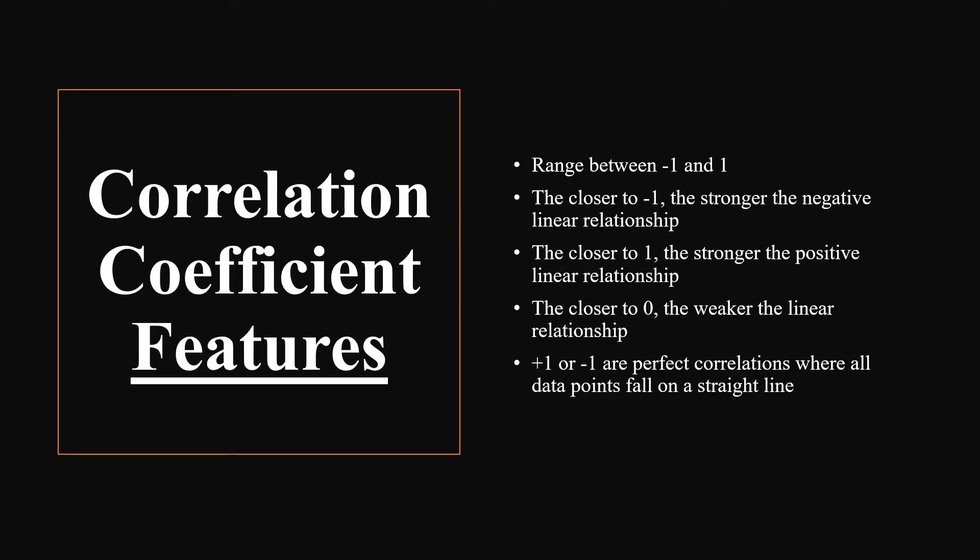The correlation coefficient features: it ranges between minus 1 and 1. The closer to minus 1, the stronger the negative linear relationship. The closer to 1, the stronger the positive linear relationship. The closer to 0, the weaker the linear relationship. Positive 1 and negative 1 are perfect correlations where all data points fall on a straight line.